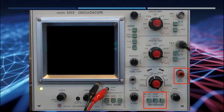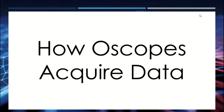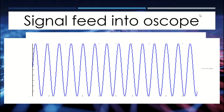The trigger is an important function that we glossed over in some previous episodes, so in this episode we're going to talk about it. To understand what triggering does on an oscilloscope, we first have to understand how oscilloscopes acquire data. On the screen we have a signal being fed in — remember it's time information on the x-axis and voltage on the y-axis. This signal begins at time equals zero and goes on forever.